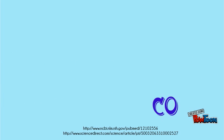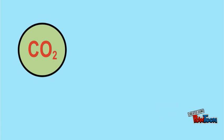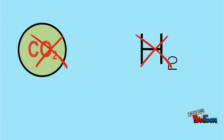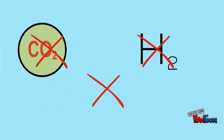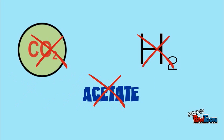Carbon dioxide methanogens are commonly reduced by hydrogen gas to produce methane and water in the subsurface of the earth. Carbon monoxide can also reduce CO2. Without substrates such as carbon dioxide, hydrogen, or acetate, methanogenesis cannot occur.